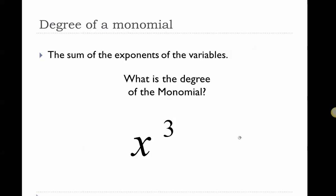Next up, we've got 3x²y. Again, look at the exponents of the variables. The 3 has an exponent — it's a 1 — but that's not a variable, so we don't need to pay attention to that. x is squared, so there's a 2. And then y is to the first power. So 2 plus 1 is 3. This is another third degree monomial.